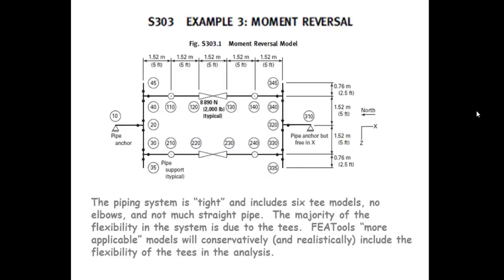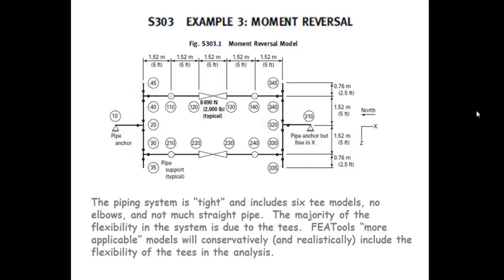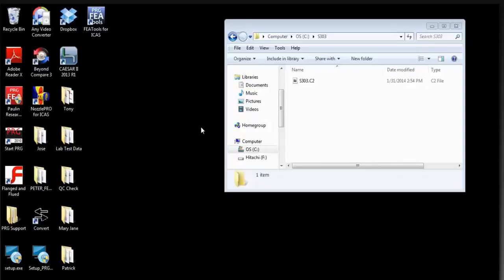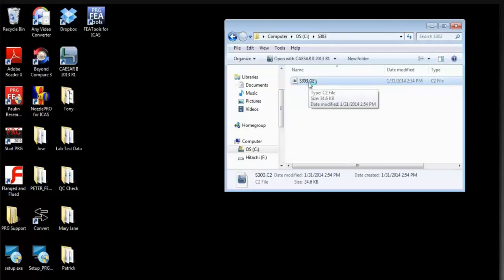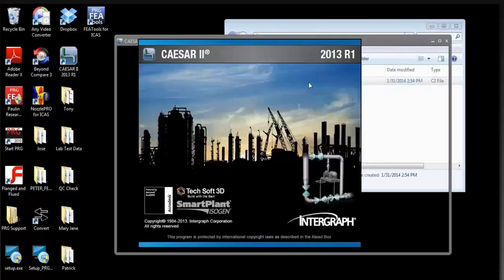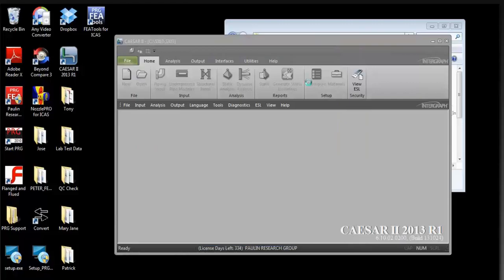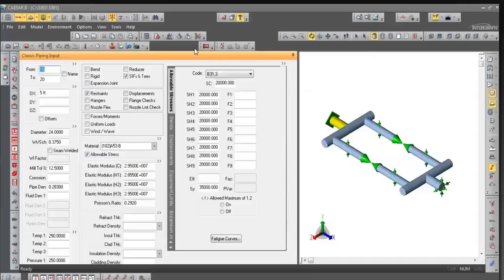Let's use the B313-S303 example problem as a test case. The S303 piping system is tight, it includes six welding tees, and is overstressed per the code. We use FEA Tools because it will include more applicable data for the welding tees, and we're particularly interested in how the flexibilities can affect the results. First, we select the original CSER II model. When the model appears, we can see that it is clearly the S303 geometry, and after checking it, we can see that it's ready to run. To run the model, we click on the Batch Run button in CSER II.